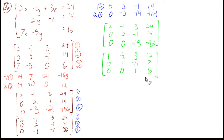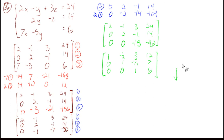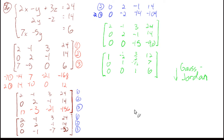Now we write it in row echelon form by making all leading entries 1. Divide row 1 by 2: 1, negative 1/2, 3/2, 12. Divide row 2 by 2: 1, negative 1/2, 7. Divide row 3 by negative 15: negative 90 divided by negative 15 is 6, so that row is 0, 0, 1, 6. Now we're going to take it to reduced row echelon form — that's called Gauss-Jordan elimination.